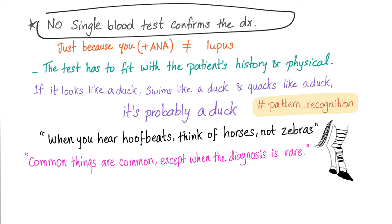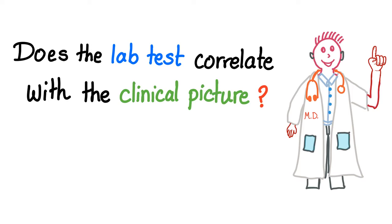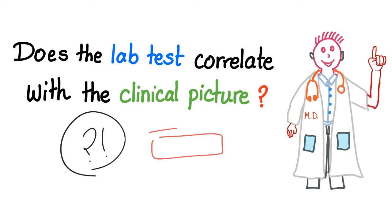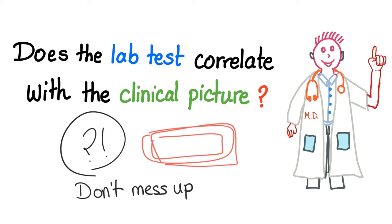Welcome to rheumatology, where no single blood test whatsoever can confirm the diagnosis. The most important question to ask yourself in rheumatology is: does the lab test correlate with the clinical picture? Some guys are asking when we're going to start talking about actual diseases such as rheumatoid arthritis, lupus, and osteoarthritis. The foundation first — let's lay the basics. After you understand the basics correctly, the rest of rheumatology is going to be a piece of cake, just like my hematology series. Everything is built from there.